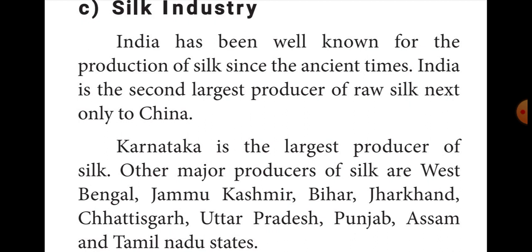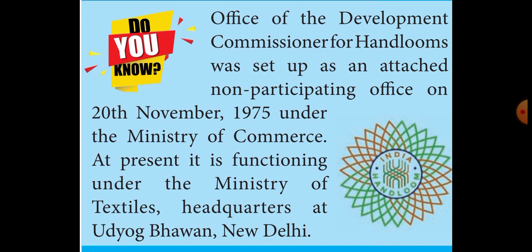From within India, Karnataka is the largest producer of silk. Other important silk-producing states are West Bengal, Jammu & Kashmir, Bihar, Jharkhand, Odisha, Uttar Pradesh, Punjab, Assam, and Tamil Nadu. The Office of Development Commissioner for Handlooms was set up on 20th November 1975, with its headquarters at New Delhi.